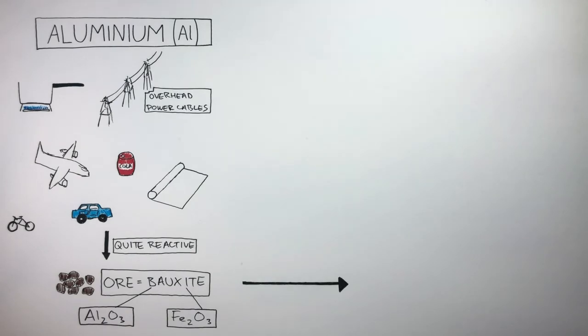We're now going to focus on how the aluminium oxide is extracted from its ore. Remember, an ore is a rock which contains enough metal that if it is extracted, money can be made.